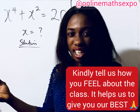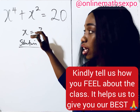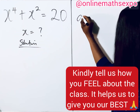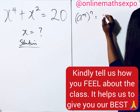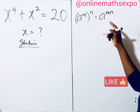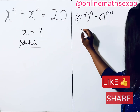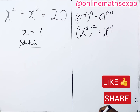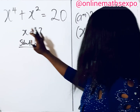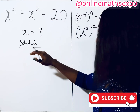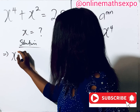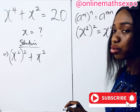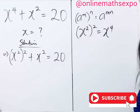There are a lot of methods you can use, but I want to show you a trick. We can rewrite x to the power of four using the exponent rule: a raised to the power m·n equals (a^m)^n. So x⁴ can be written as (x²)². That means we can now have x² raised to the power of two, plus x² equals 20.